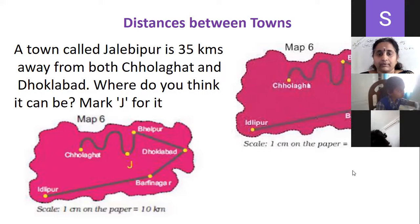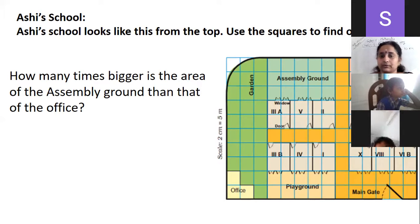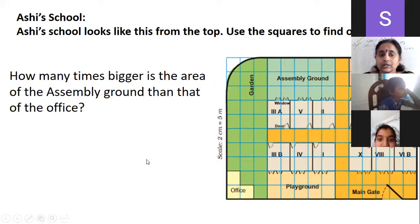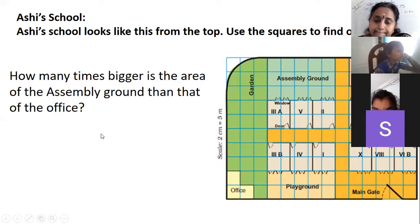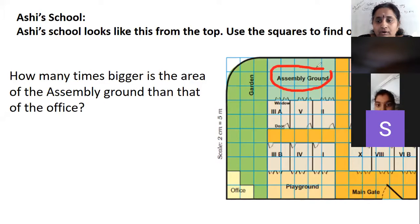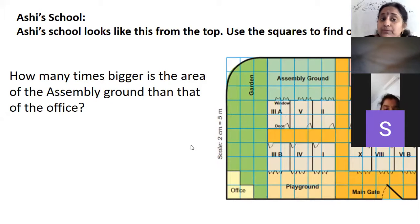Now see here — this is Ashi School. The map looks like this from the top. Use the squares to find out how many times bigger is the area of the assembly ground than that of the office. How will you find the area? By counting squares! Very good. The assembly ground has 15 square centimeters. The office has 3 square centimeters. Excellent!